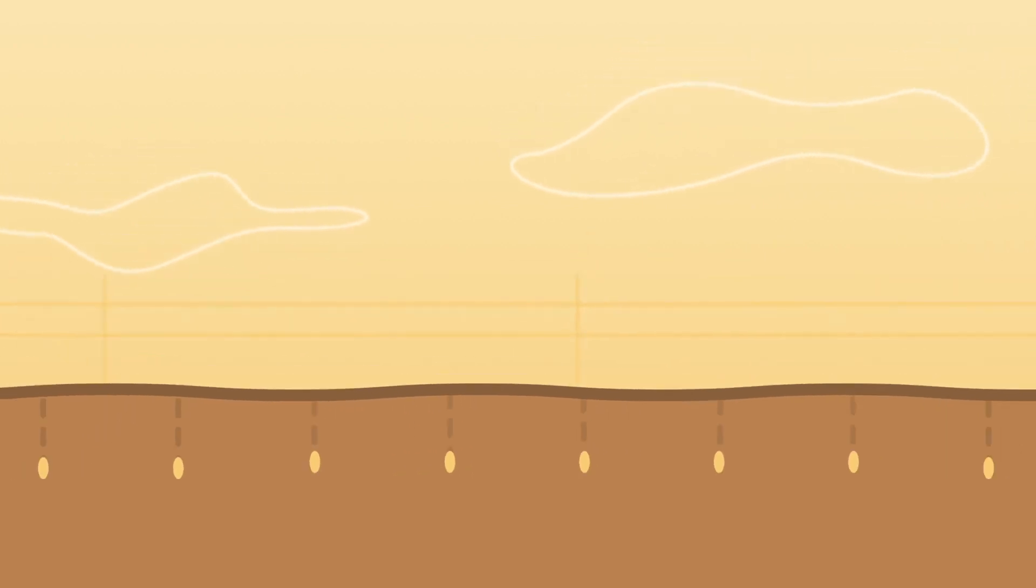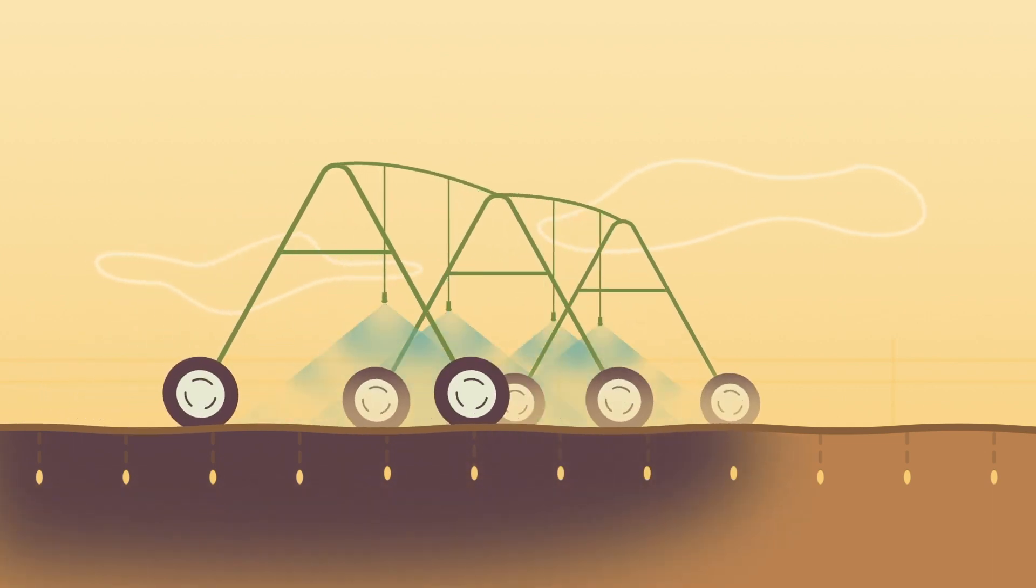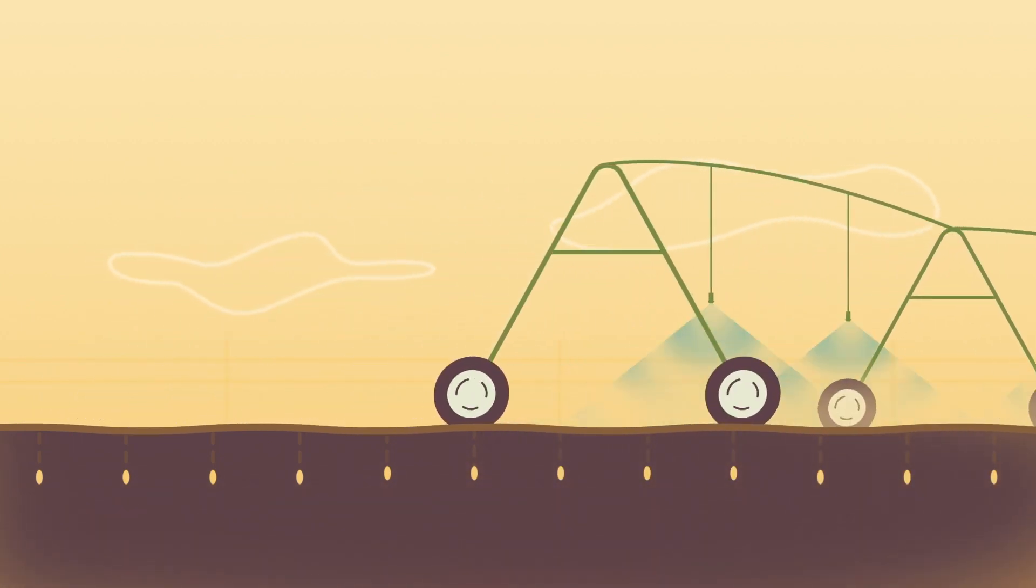Now we set up the irrigation. Advanced technology ensures that the seeds get just the right amount of water and fertilizer that they need. And then it's time to wait.